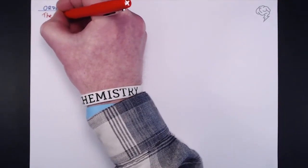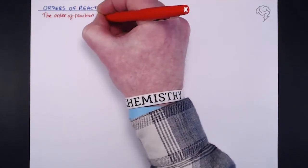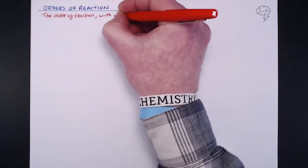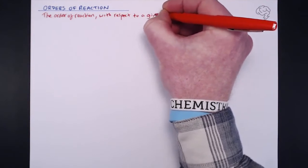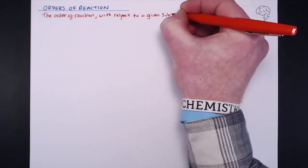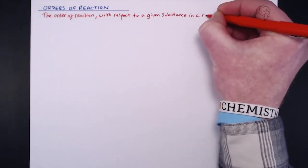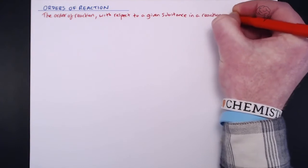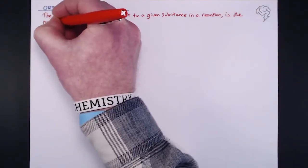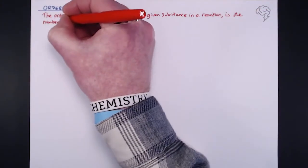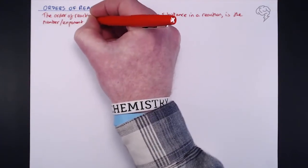So the order of reaction — the order of reaction with respect to a given substance in a reaction, so a particular reactant, is the number or exponent that describes the effect that its changing concentration has on the initial rate of reaction.